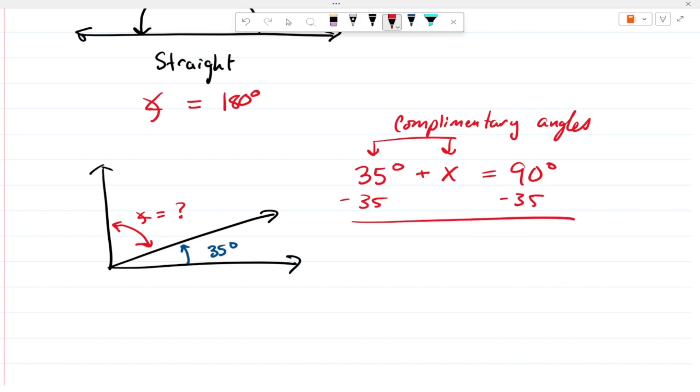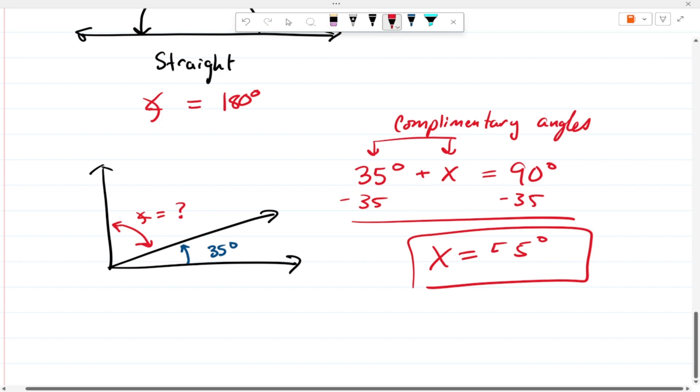X equals 65 degrees. Oh, oh, sorry. Math is bad. 55 degrees, my bad. A little bit of a joke there. Hopefully, you still like me after today.